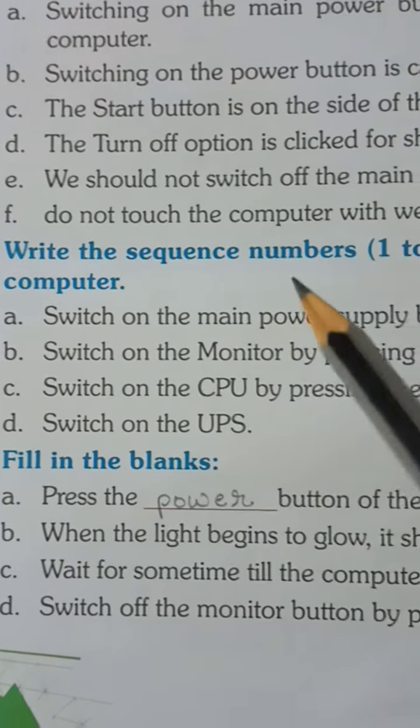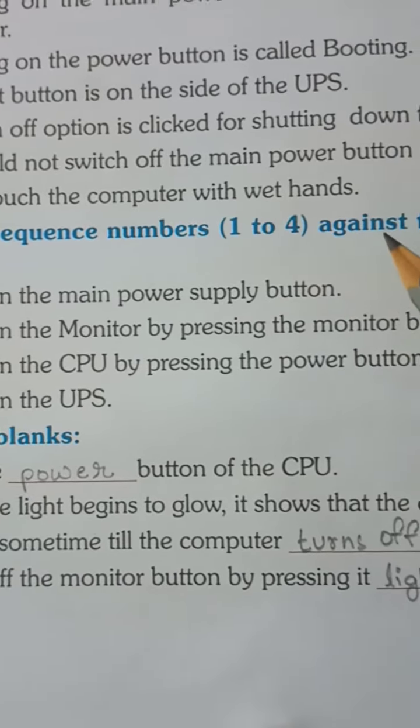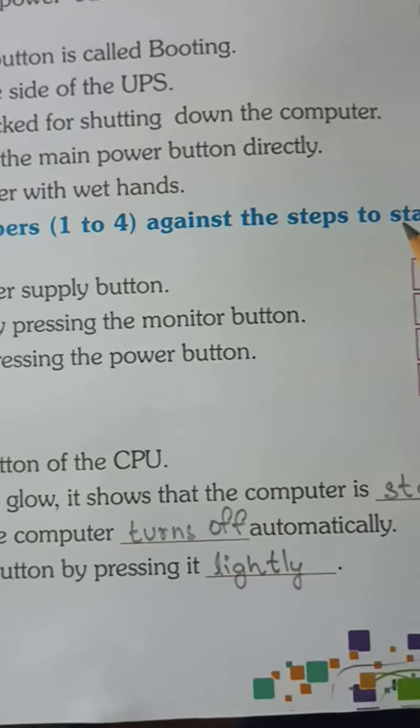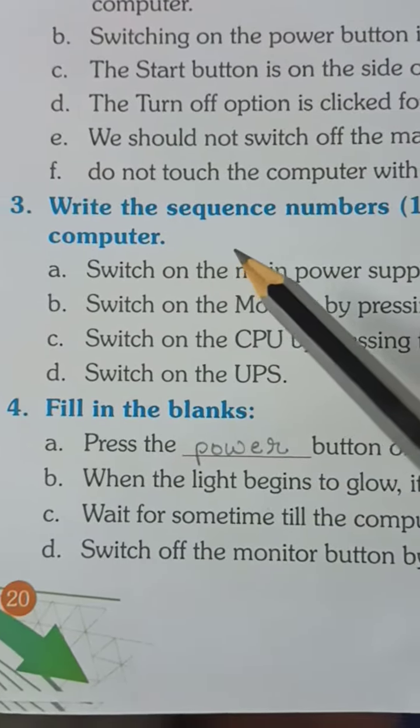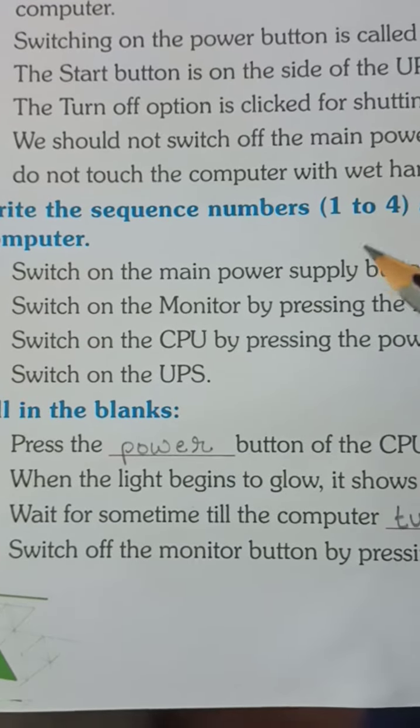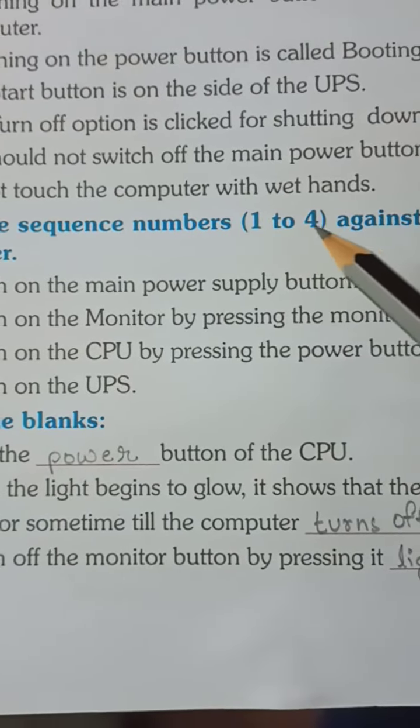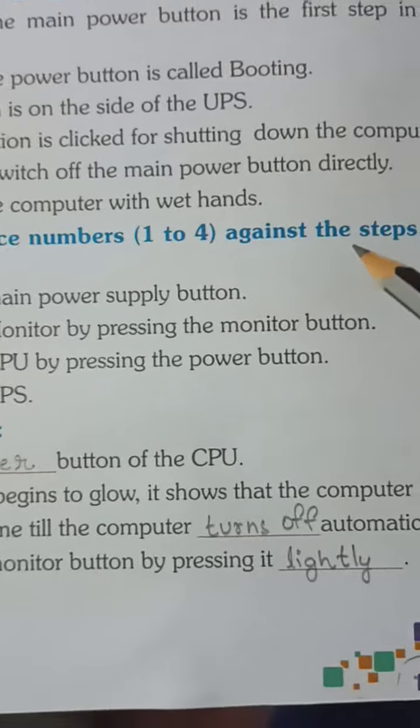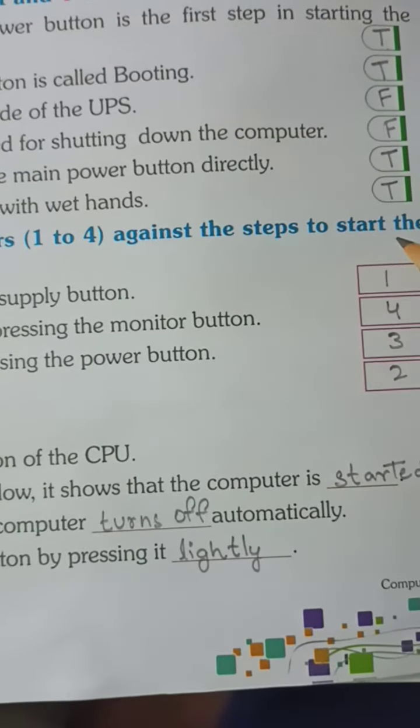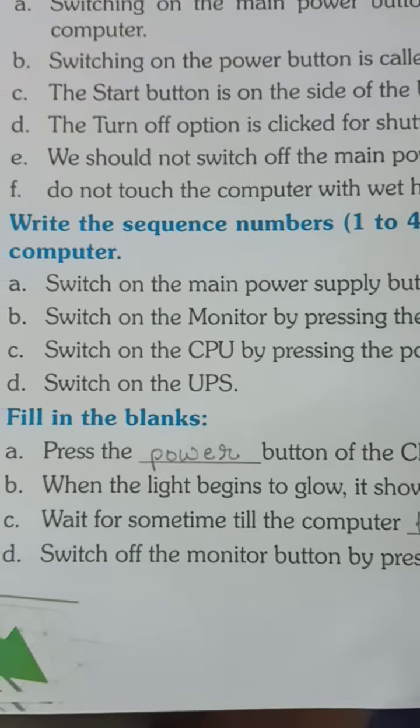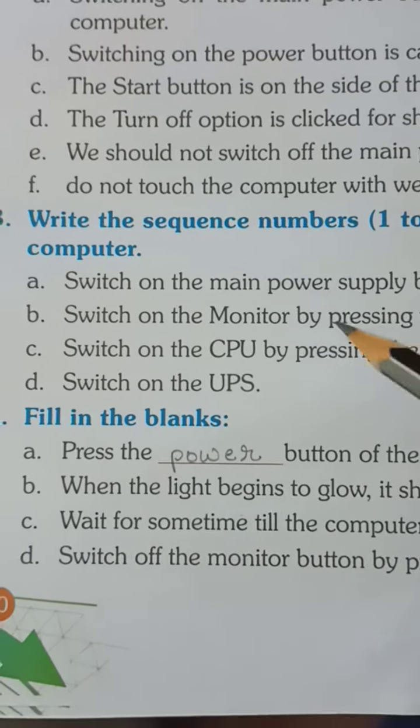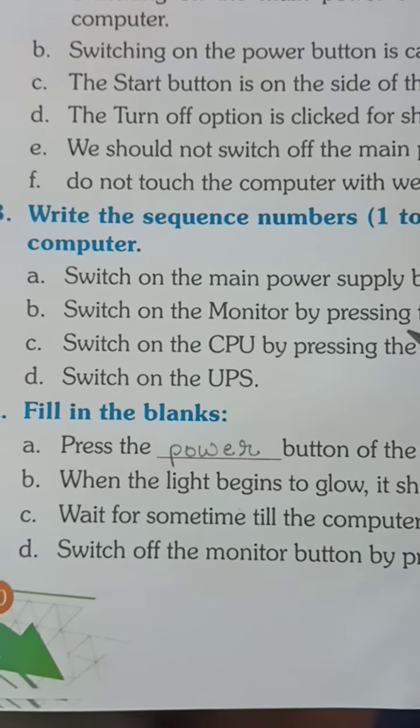Number 3, write the sequence number 1 to 4 against the steps to start the computer. Here you have a sequence given, so you have to write the sequence number 1 to 4. In the case of the steps, you can start the computer, you can read the sentence and write the sequence number.